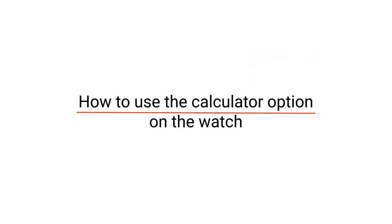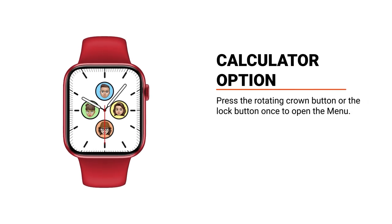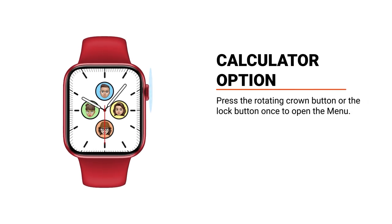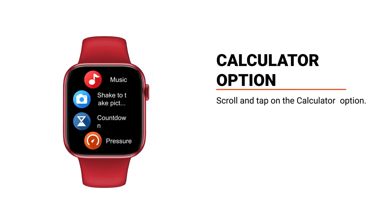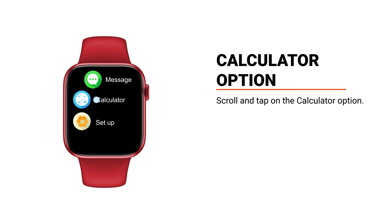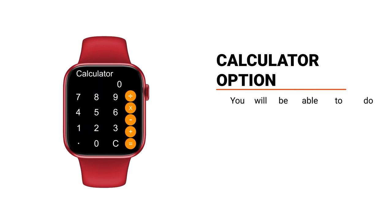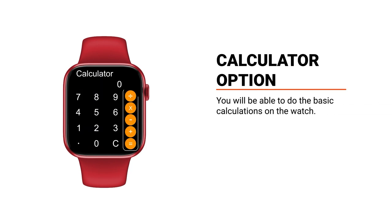How to use the calculator option on the watch: press the rotating crown button or the lock button once to open the menu. Scroll and tap on the calculator option. You will be able to do basic calculations on the watch.